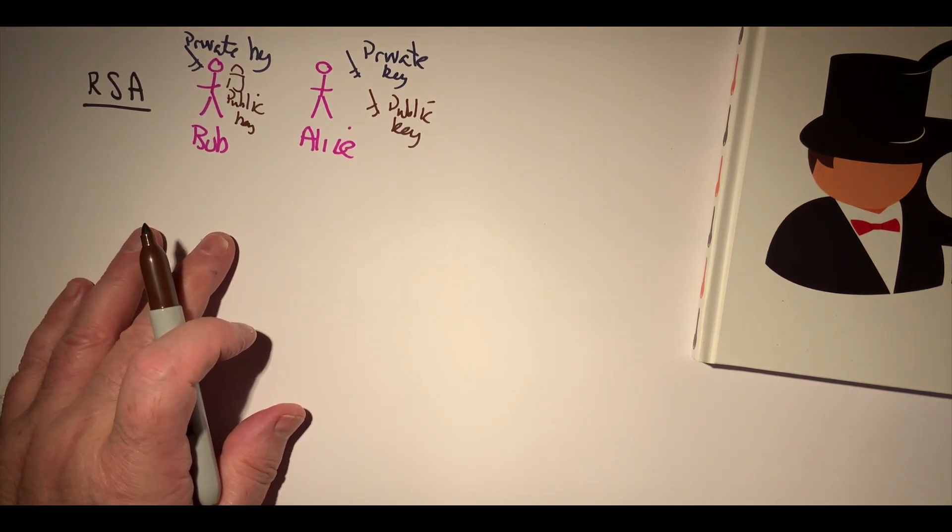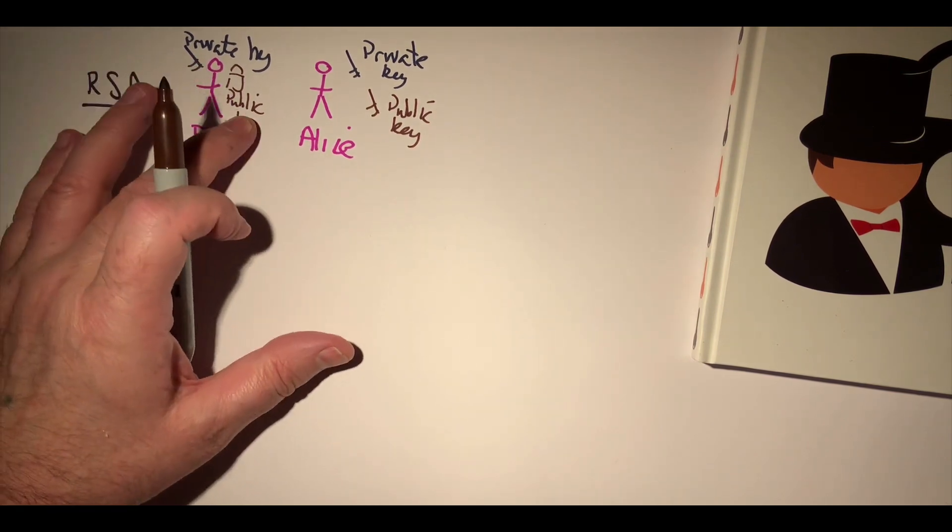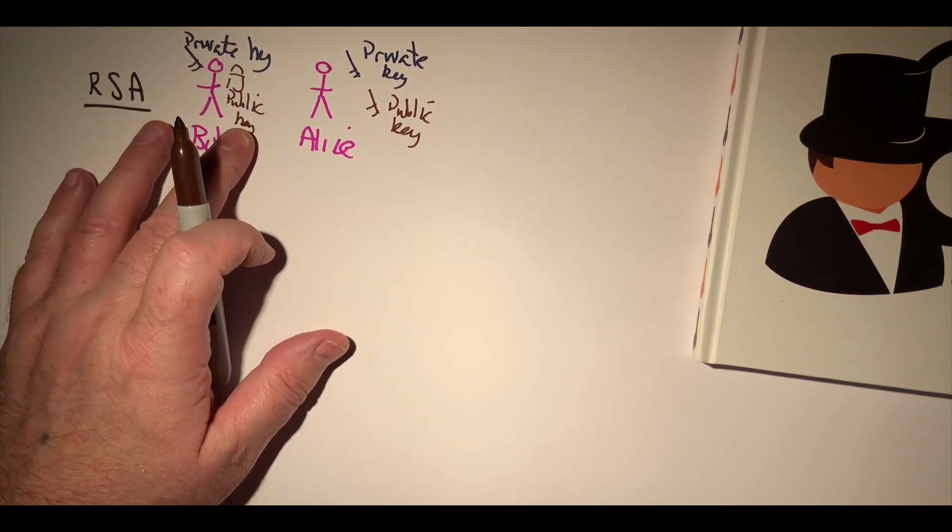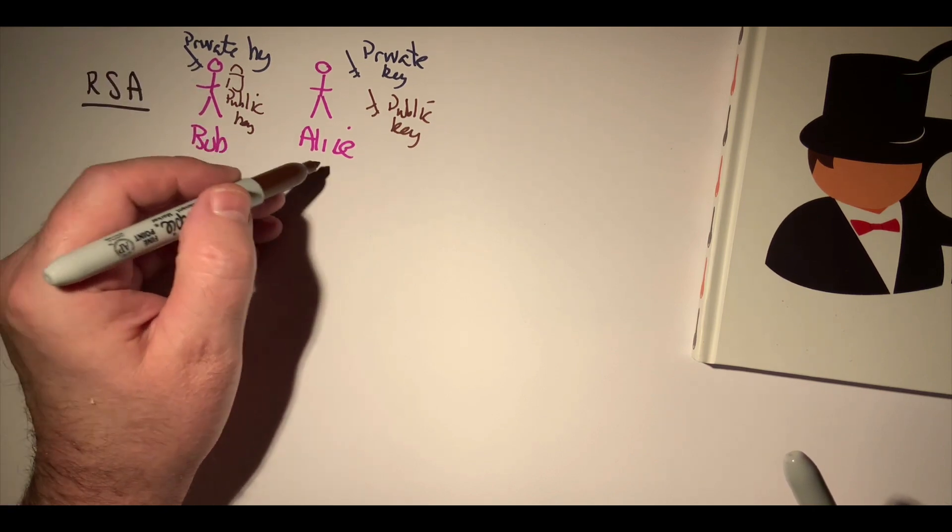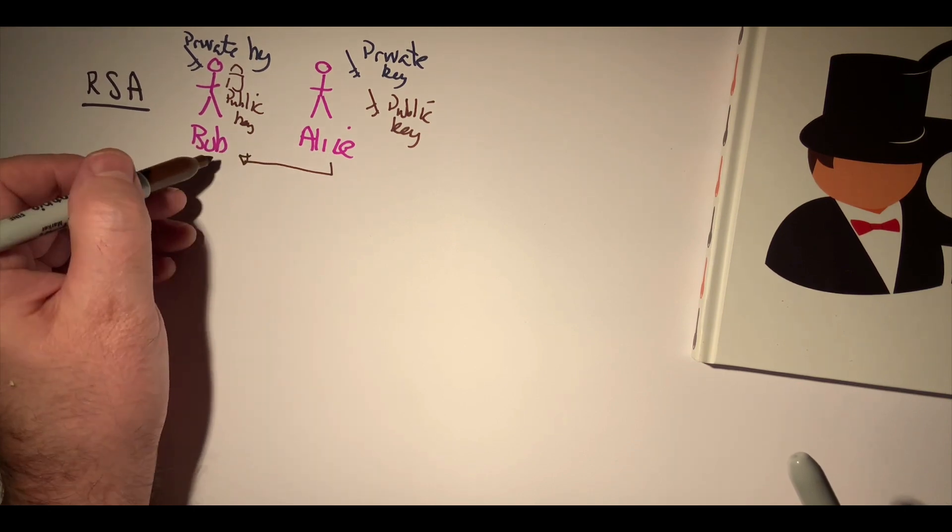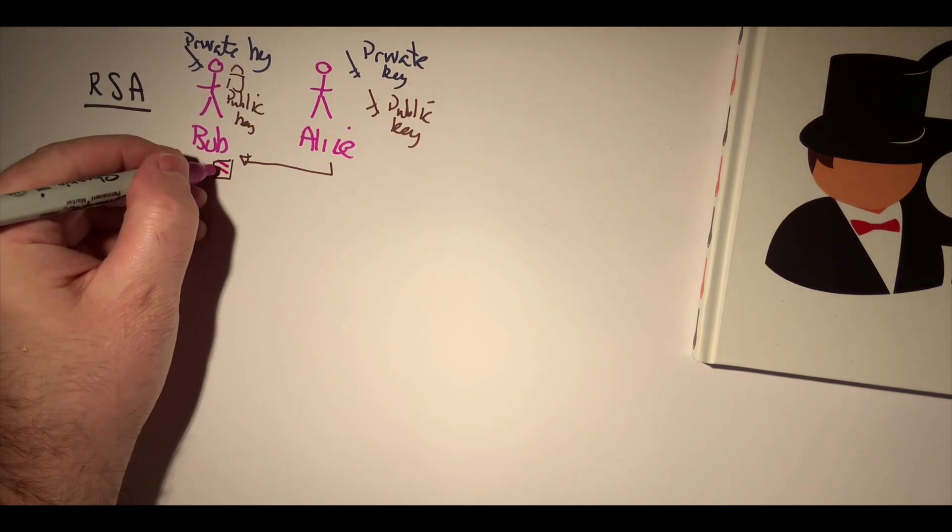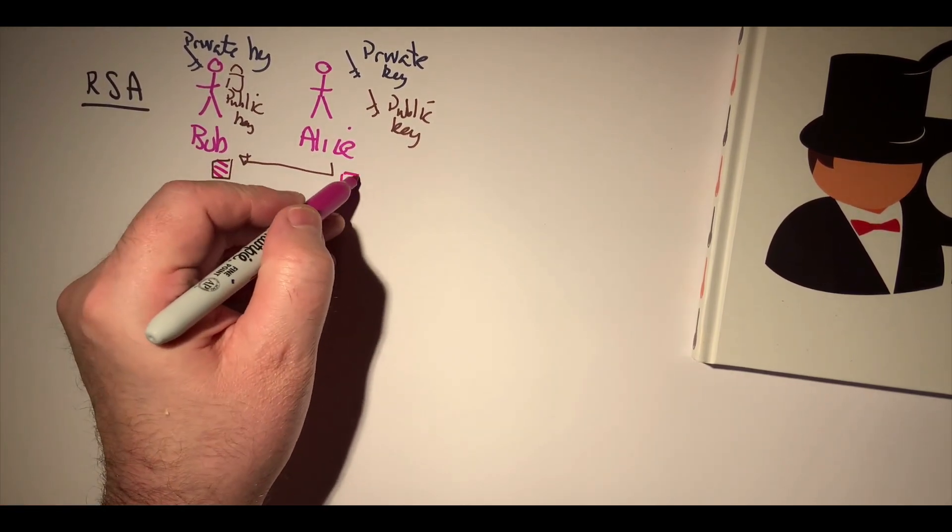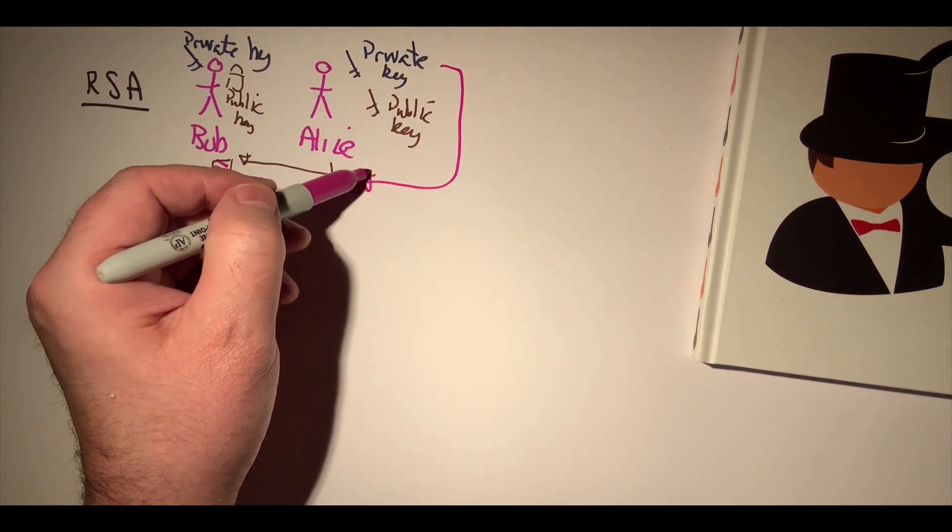Now what happens is that we can use the public and the private key together. So if Bob encrypts something with Alice's public key, then Alice will decrypt with her private key.